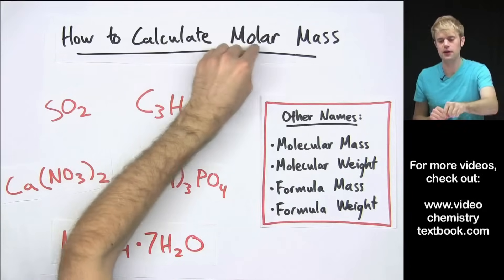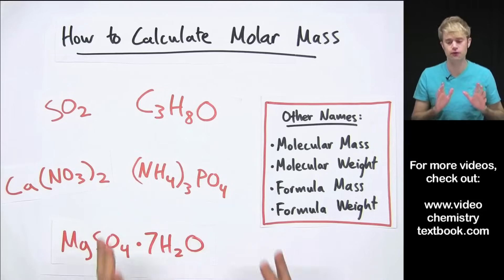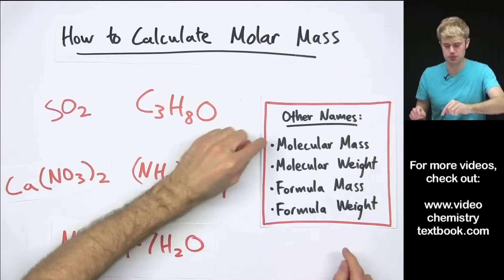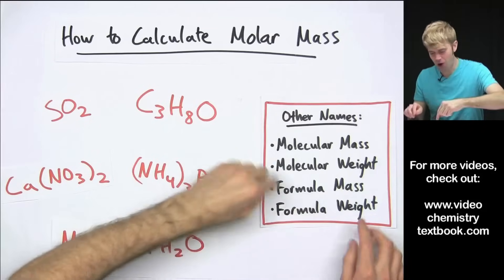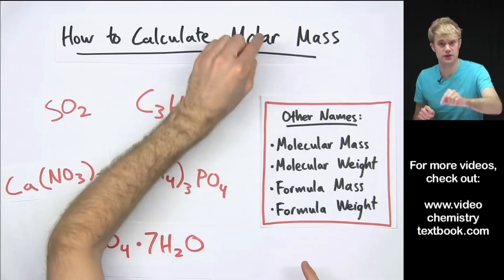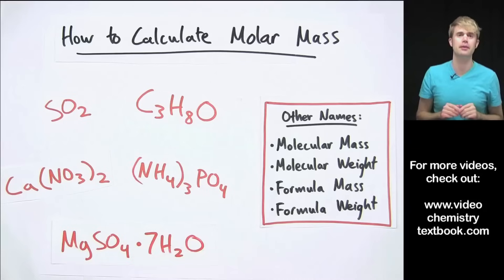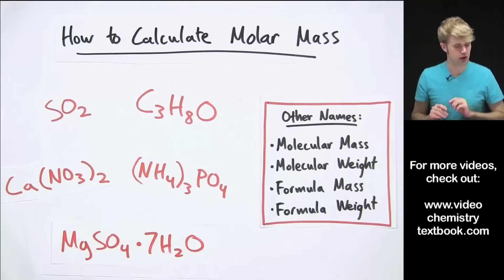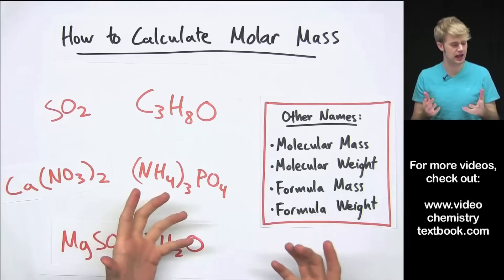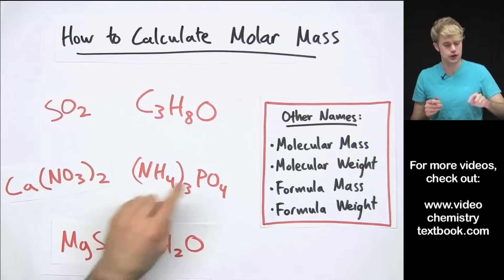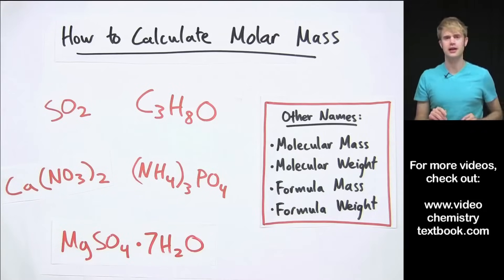In this lesson, we're going to learn how to calculate molar mass for a chemical compound by looking at its formula. Your teacher or textbook might use other names instead of molar mass, but these are all pretty much just different names for the same thing. We'll do a bunch of practice problems, starting with some relatively straightforward examples and then moving on to more challenging ones. By the end of this, you're going to be a total pro at calculating molar mass.